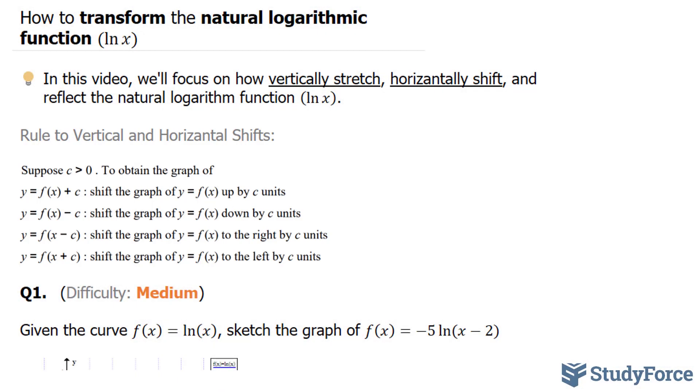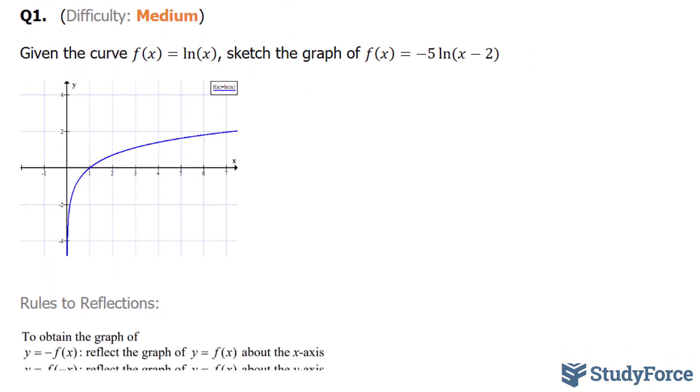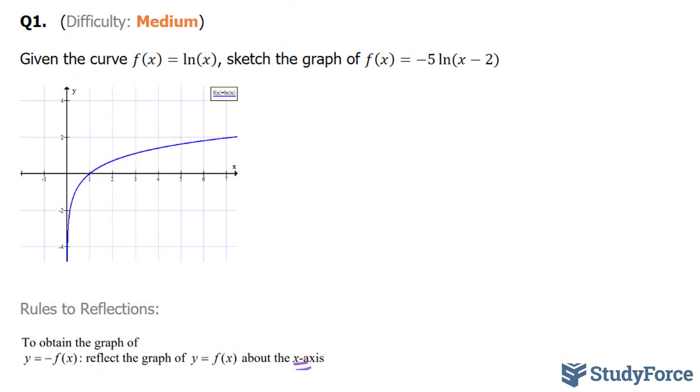Let's start with question one. In question number one, they ask us, given the curve f(x) = ln(x), sketch the graph of f(x) = -5ln(x-2). Now, what you see below is the graph of ln(x). And you'll notice something, that this blue curve never passes the y-axis.